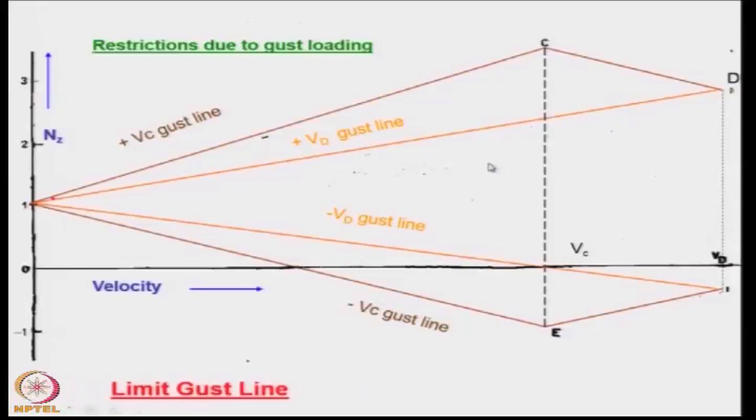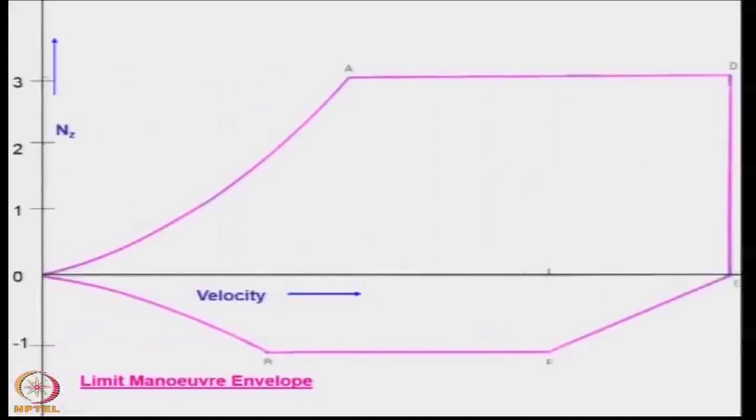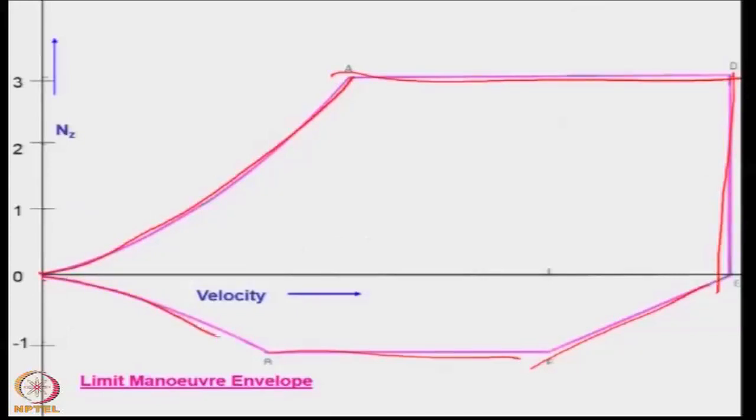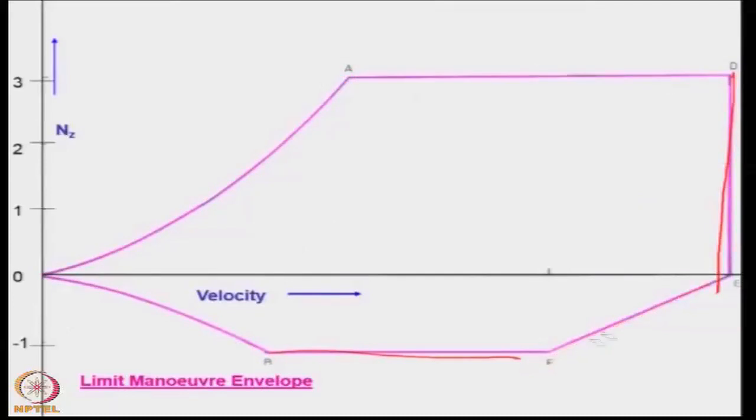This is the limit gust line. Now what you do is this is the limit maneuver envelope which was obtained earlier by specifying the limits on the upper and the lower maximum values, the design diving speed, this is the upper and the lower value, this is the cut provided as I mentioned. And this corresponds to the CL max, both positive and negative. So what you are getting here is basically the limit envelope in which the aircraft can be maneuvered.